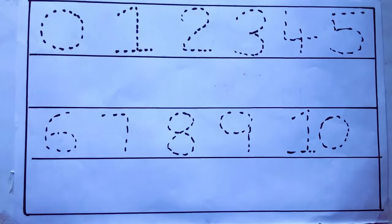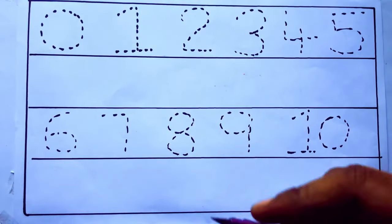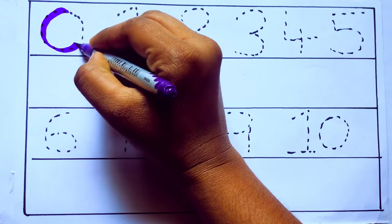Let's draw numbers. Violet color, 0. Z-E-R-O.